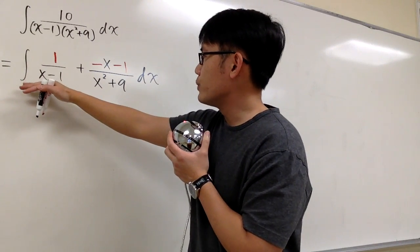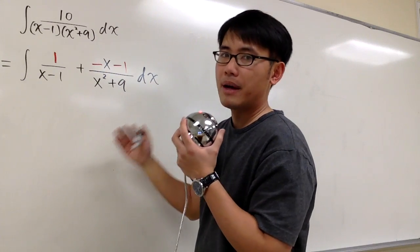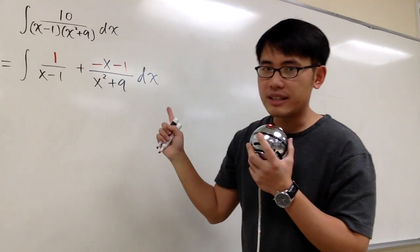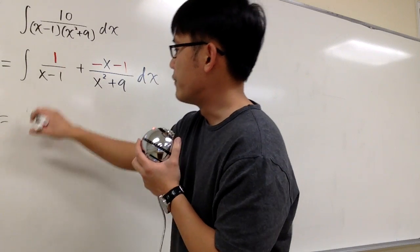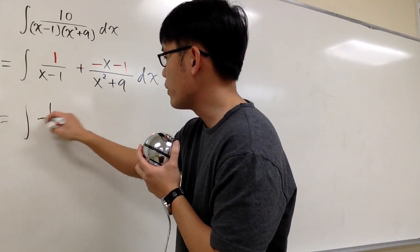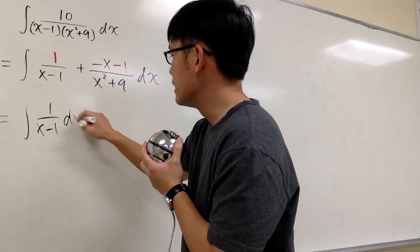So this is another look of the same integrand, but then this is not really ready yet. We still have to break this apart. So let's look at this. The first one is okay to go, so we can just write down the integral of 1 over x minus 1 dx.